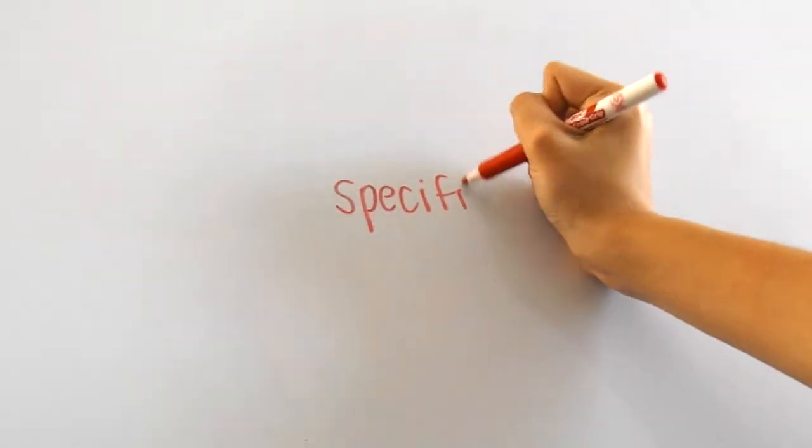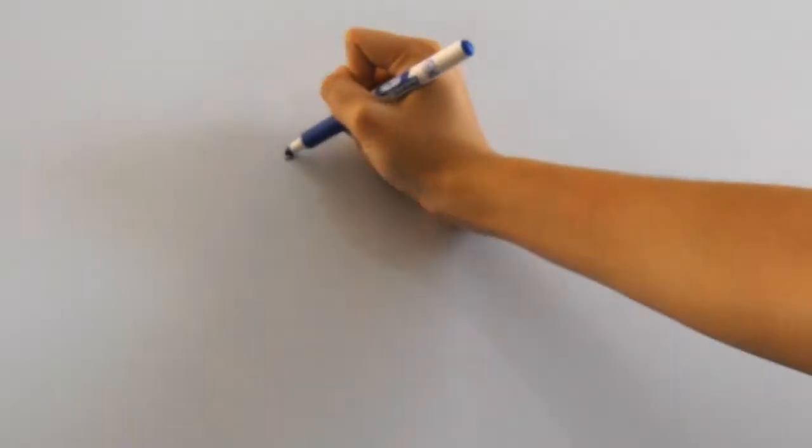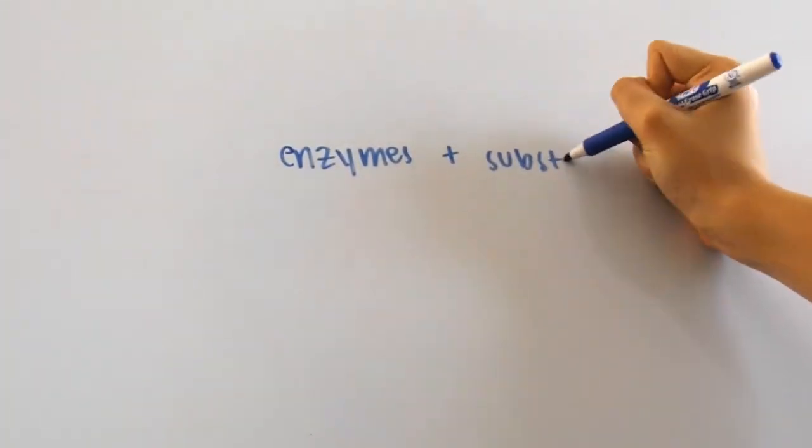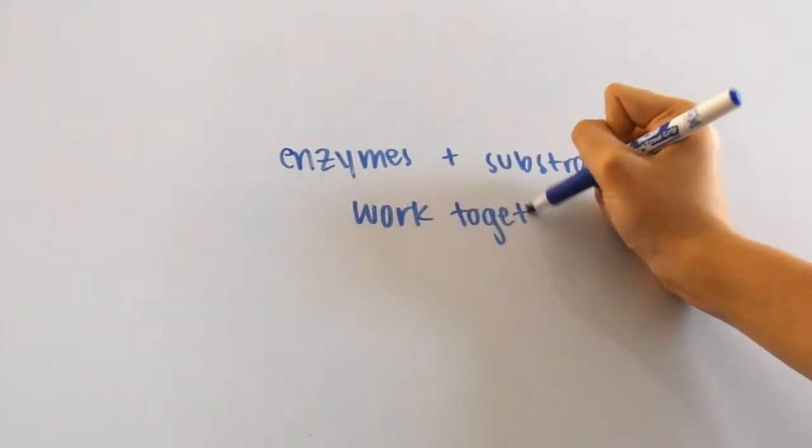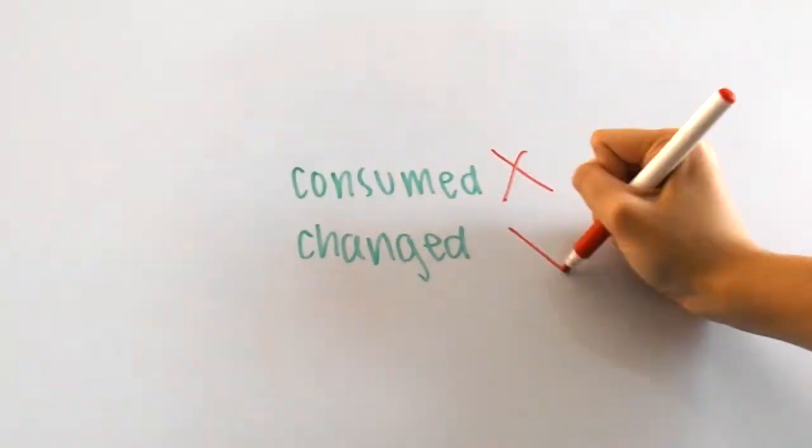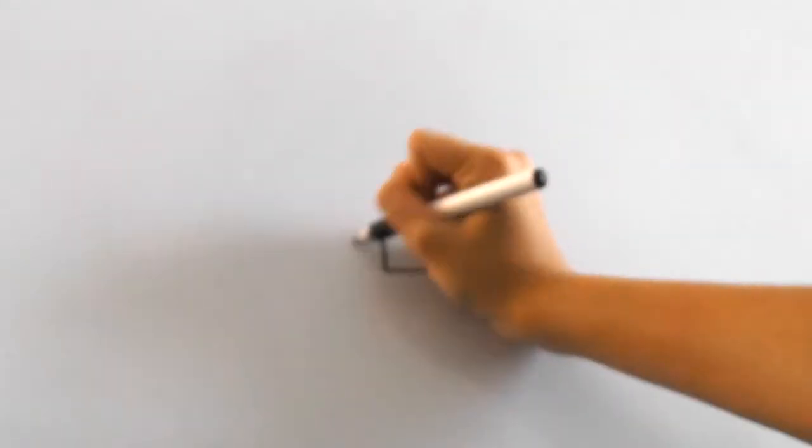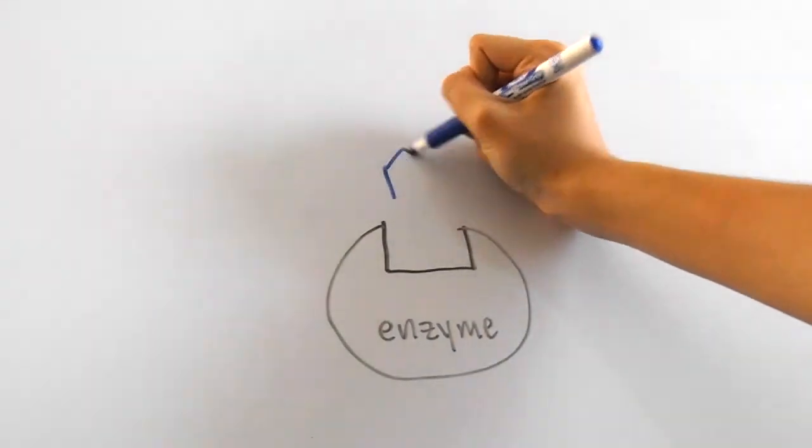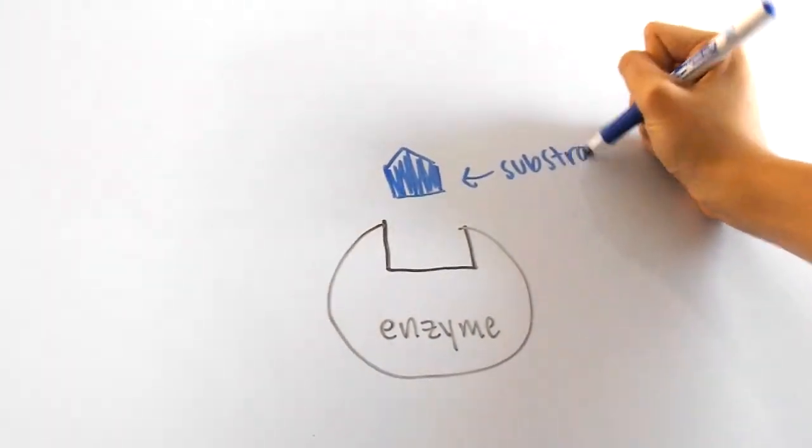Enzymes also are extremely specific and can only work on certain substrates. Substrates are the molecules that enzymes work with. Enzymes do not get consumed or changed after the reaction. Once the reaction happens, the enzyme reverts back to its original form.